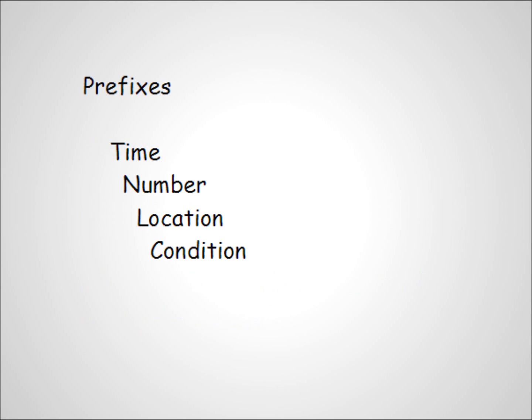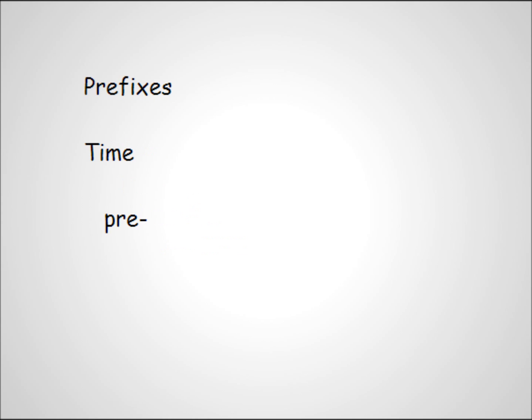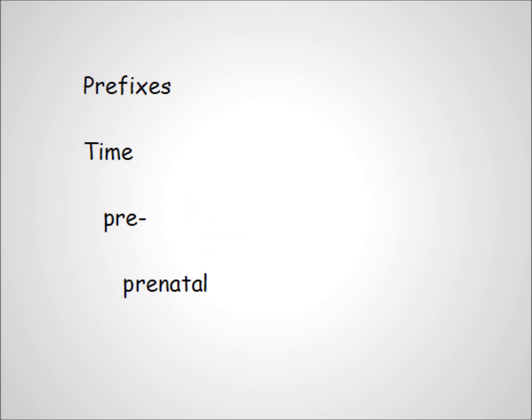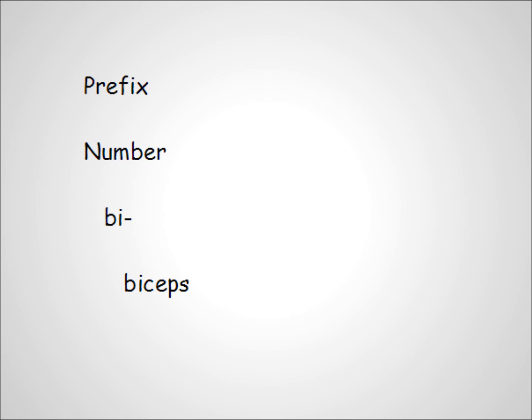Prefixes tell us time, number, location, and condition. An example of time is 'pre,' as in prenatal, meaning before the time of birth. An example of number is biceps — bi means two, and the biceps muscle is divided into two heads or parts.